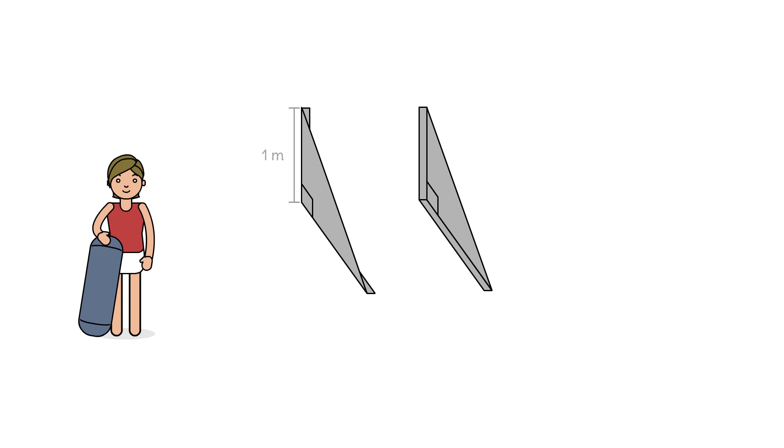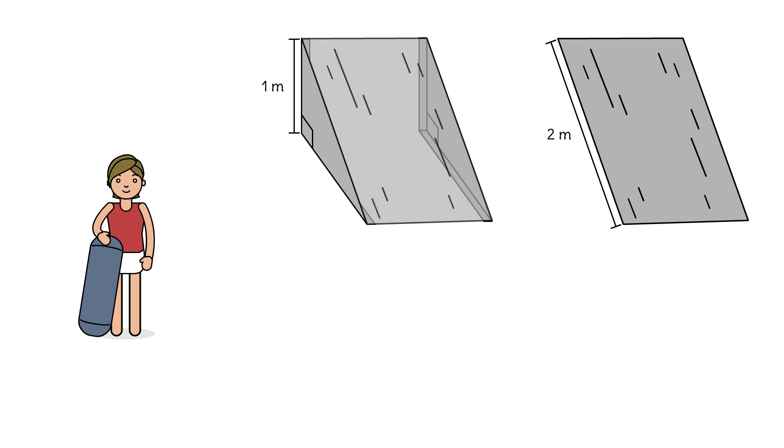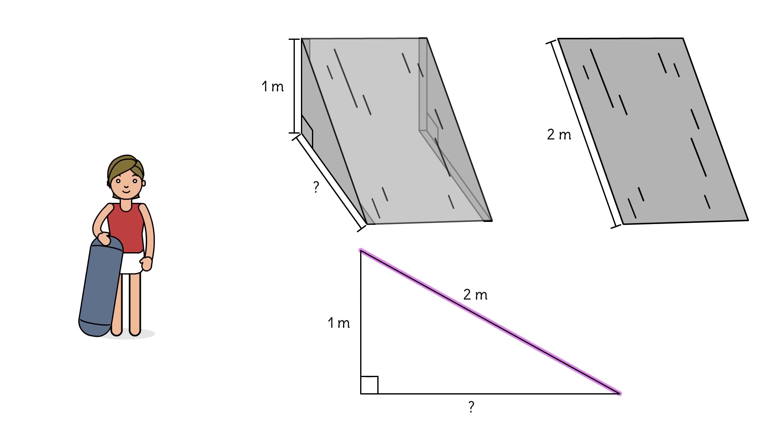She designs the ramp so that it's one meter tall. That's one leg of the right triangle. Rosalina has a piece of plywood for the face of the ramp that's two meters long. That's the hypotenuse of the right triangle. She needs to determine the length of the remaining leg to complete her ramp.